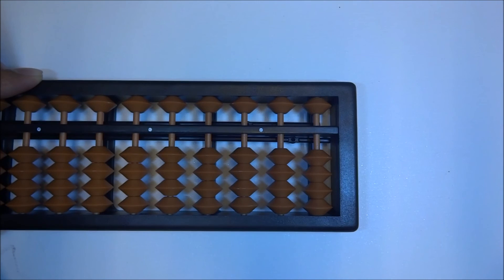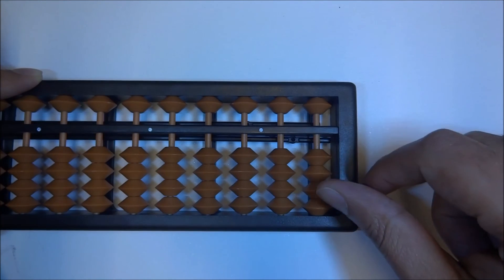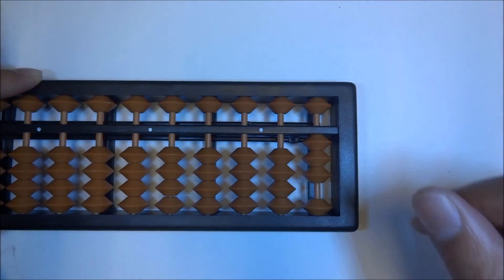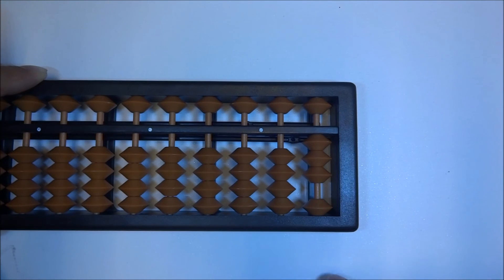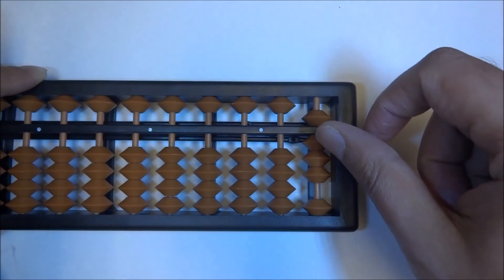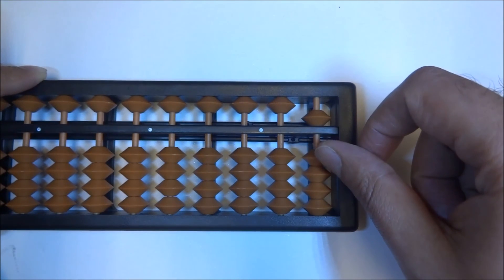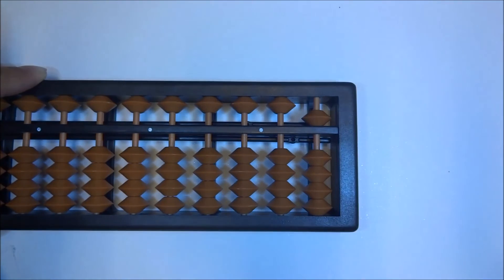Let's redo it one more time. 3 plus 2. So up 3. We need to do up 2. But again we don't have enough earthly beads. So by finding what we already know, the little friend of 2 is 3. So we're going to move up 5 and move down the little friend, which is 3. And we have the answer, 5.